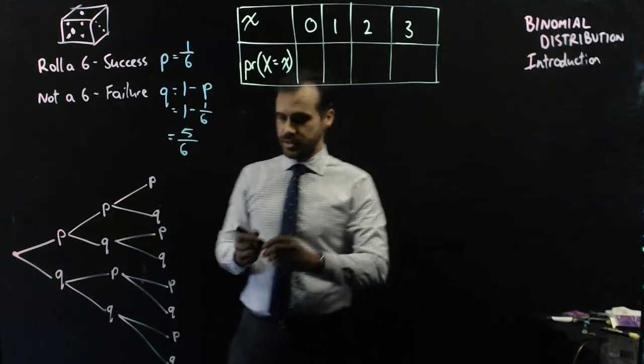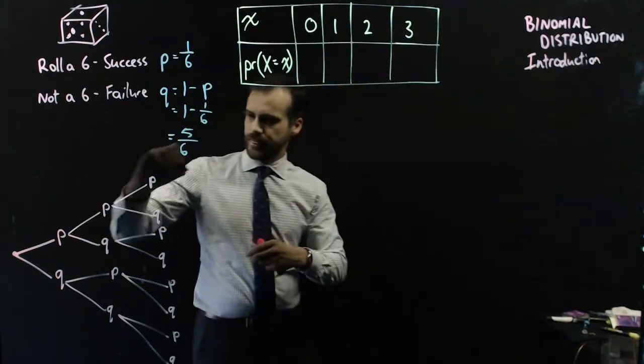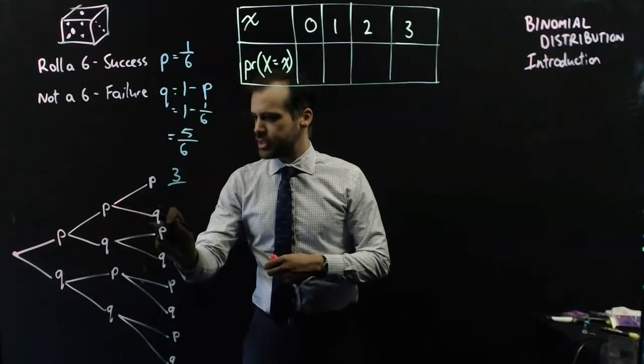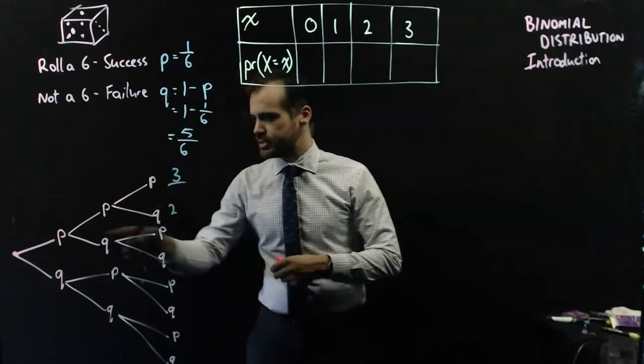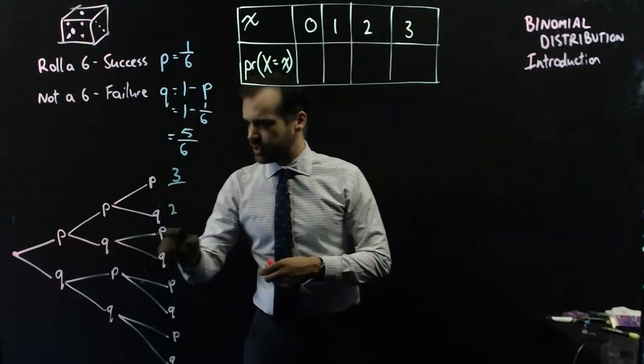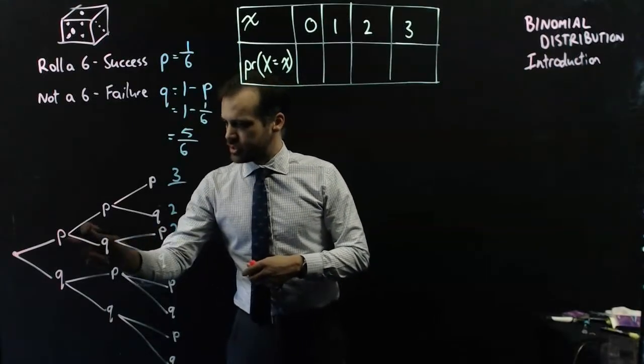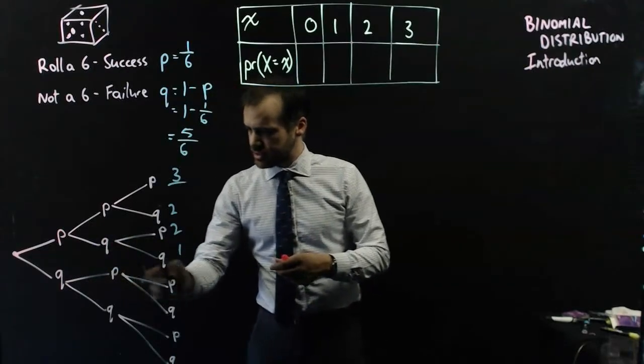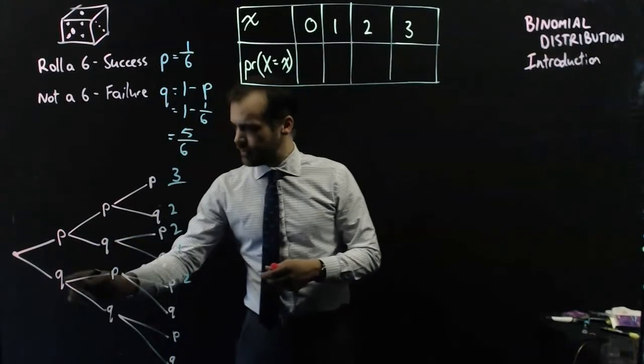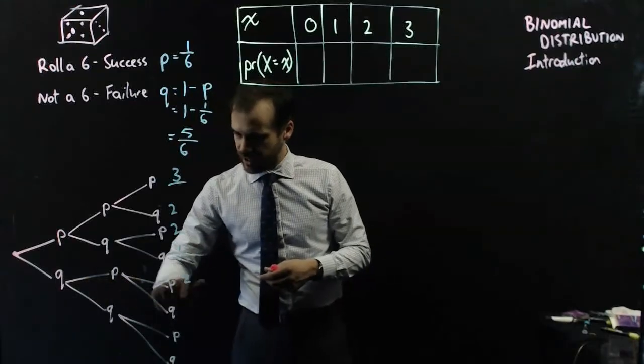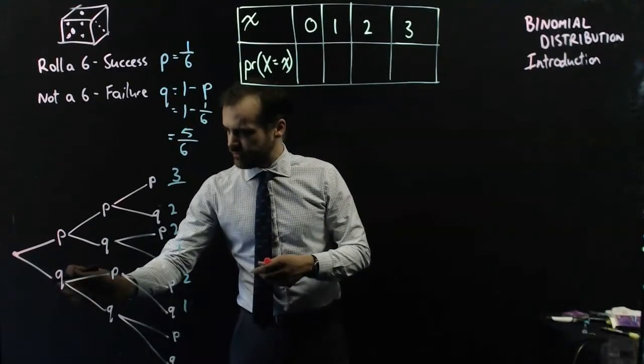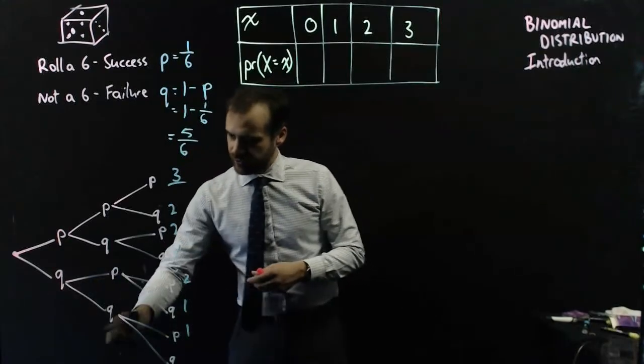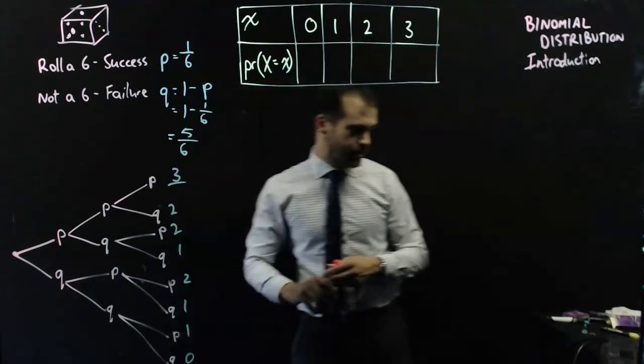I had 3 successes there. I had 2 successes and a failure, so 2 successes there. Success, failure, success - 2. Success, failure, failure - 1. Failure, success, success - 2. Failure, success, failure - 1. Failure, failure, success - 1. Failure, failure, failure - 0. So I had somewhere between 3 successes and 0 successes.